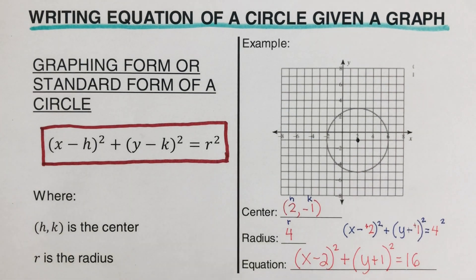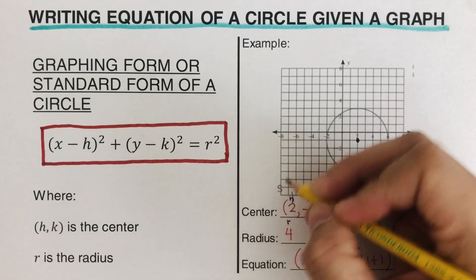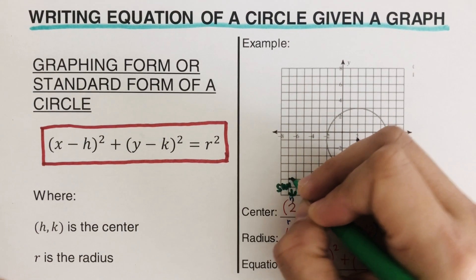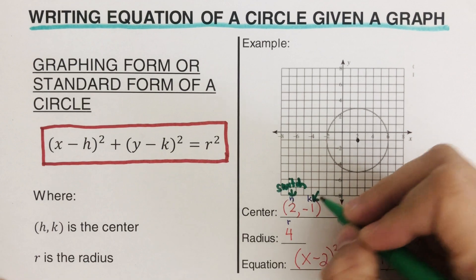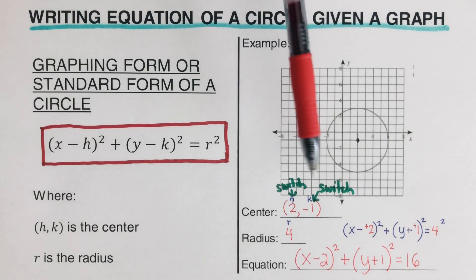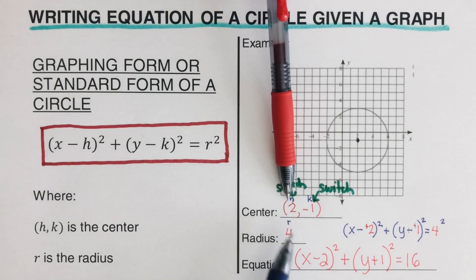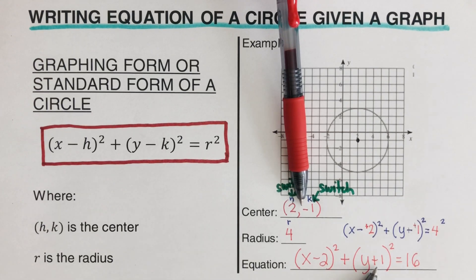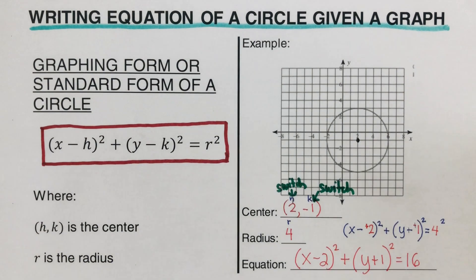Here's a quick trick: for a circle equation, you switch the signs of h and k. So if h was positive 2, switch it — it becomes minus 2. If k was negative 1, switch it — it becomes positive 1. Then write all the rest as normal. This makes it faster to write the equation directly.